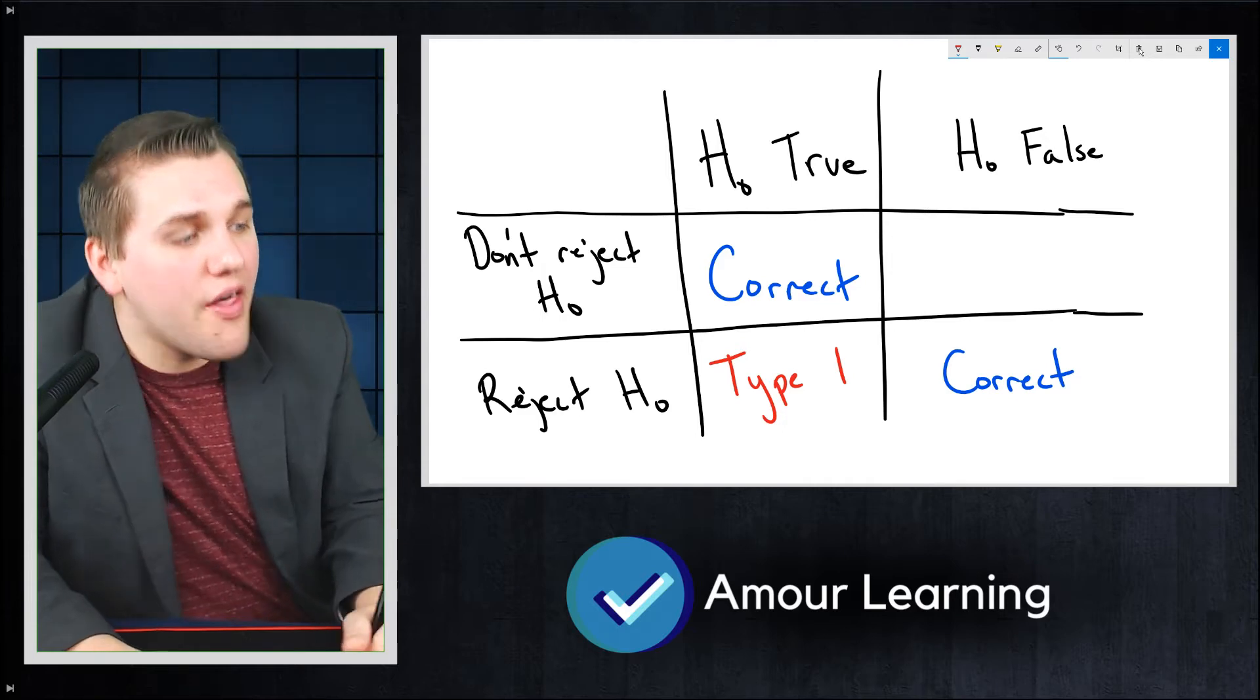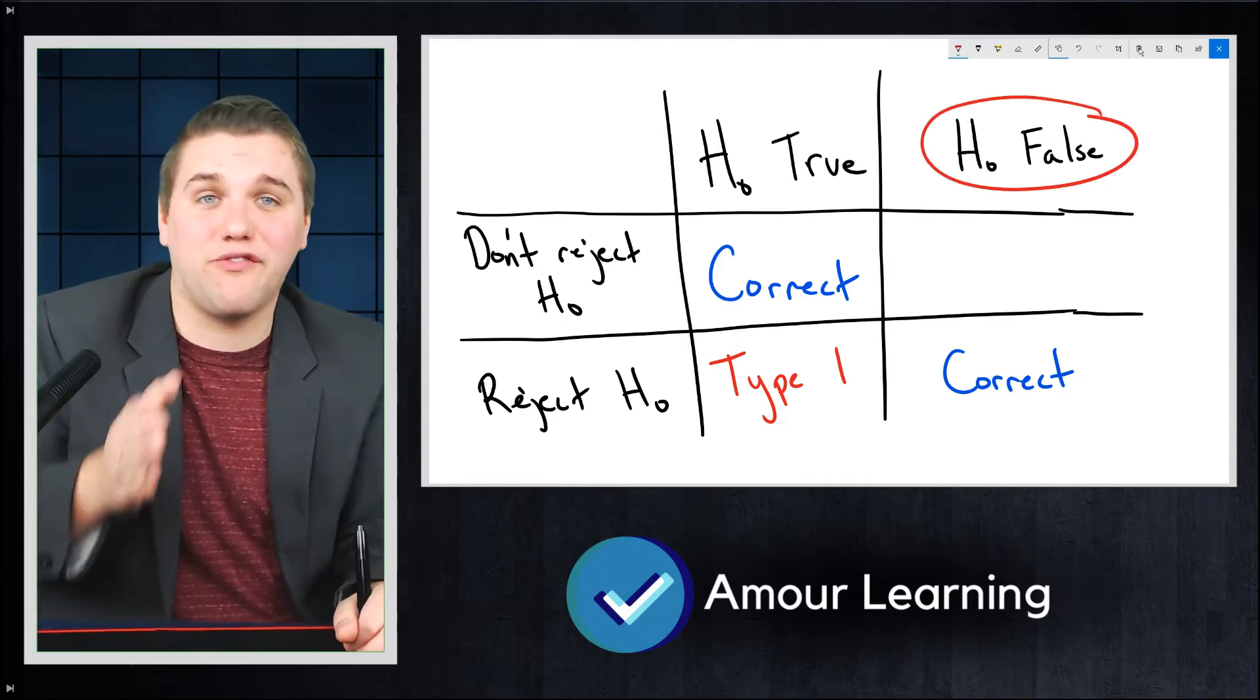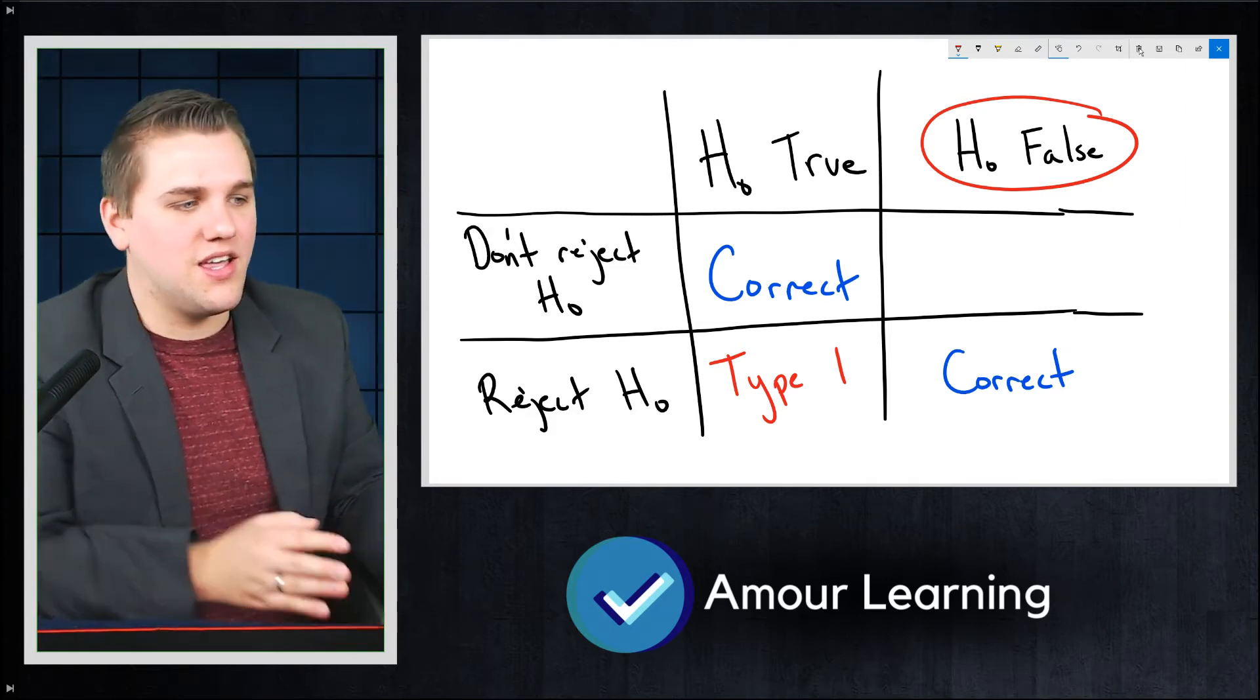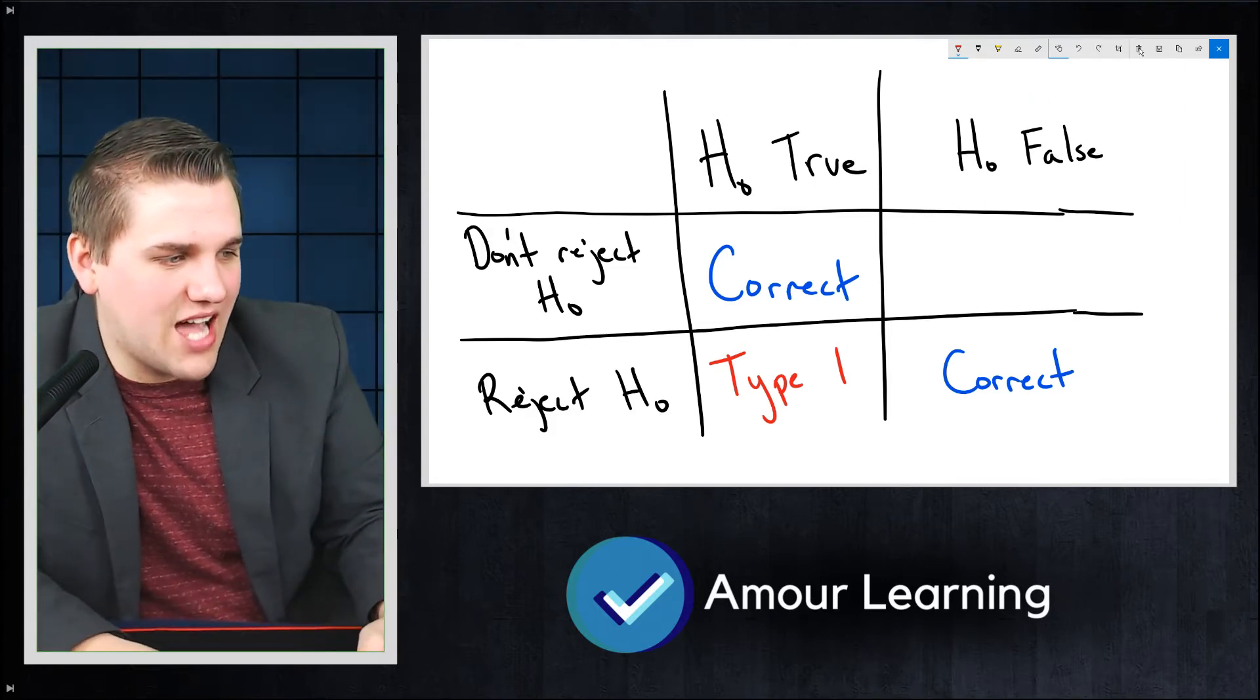Now, the other type of error is if the null hypothesis is in fact false, but your experiment doesn't show that, then that is a type 2 error.